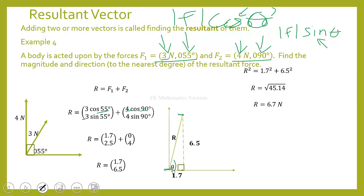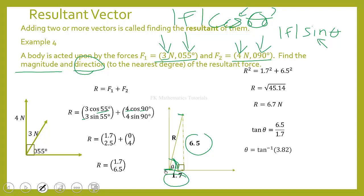The magnitude of the resultant force is 6.7 Newtons. To find the direction, we apply trigonometry: tan θ = 6.5 / 1.7, so θ = tan⁻¹(3.82) ≈ 75.33°, which to the nearest degree is 075°. Therefore, the resultant force is 6.7 Newtons at 075 degrees.